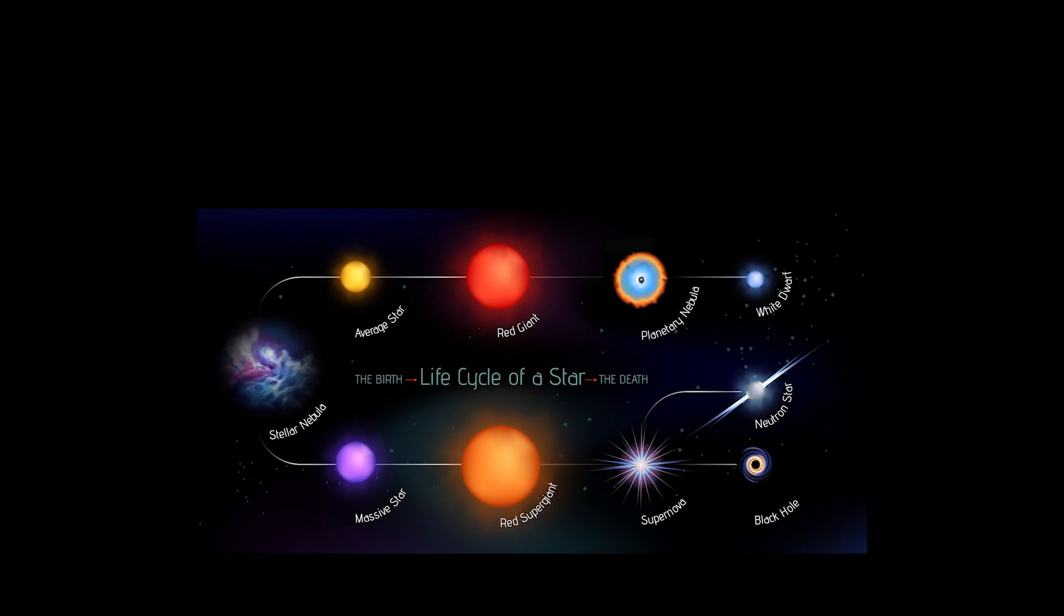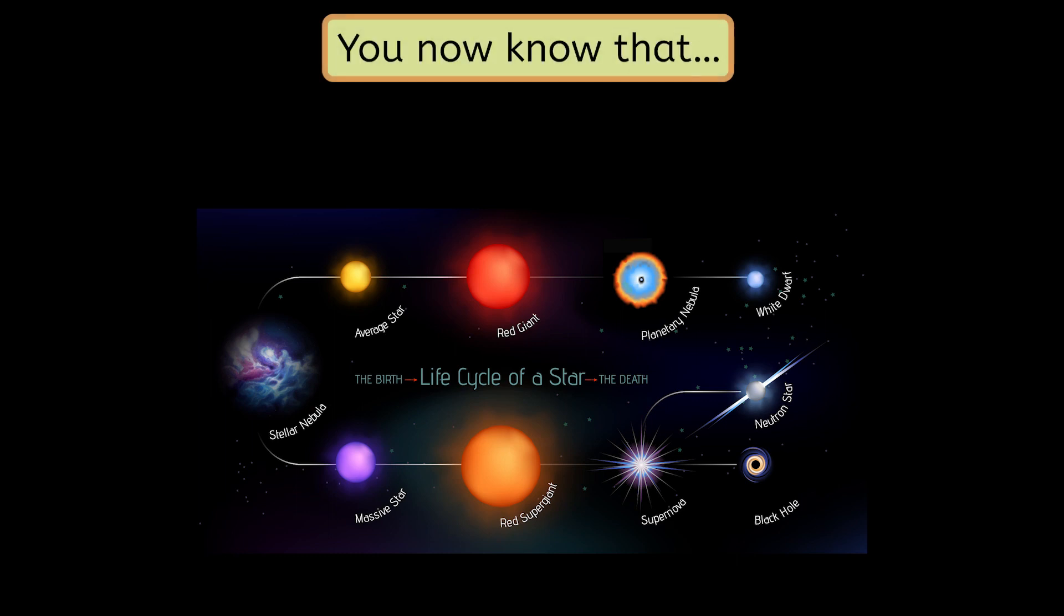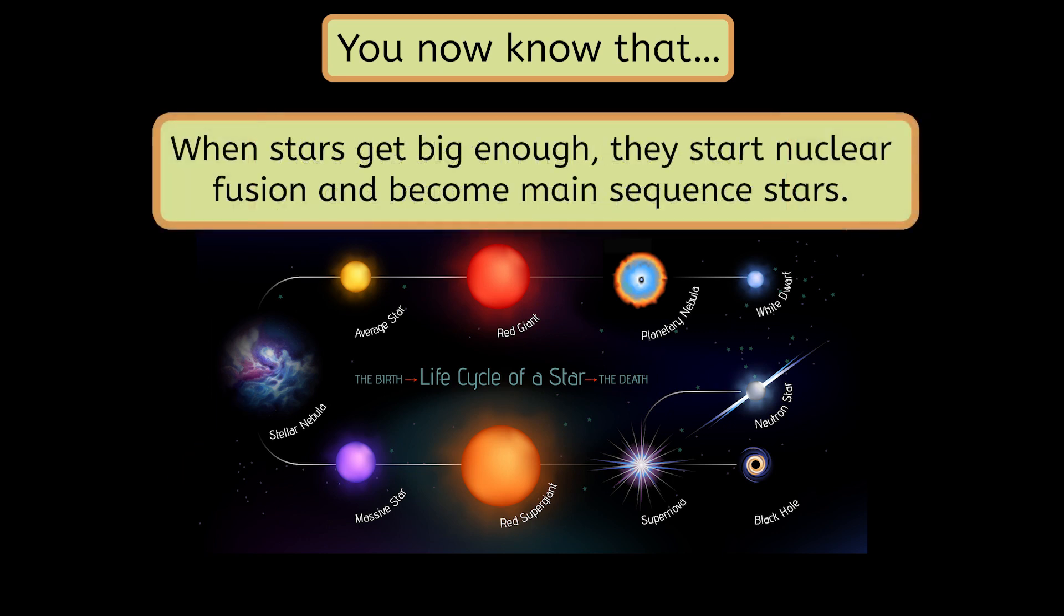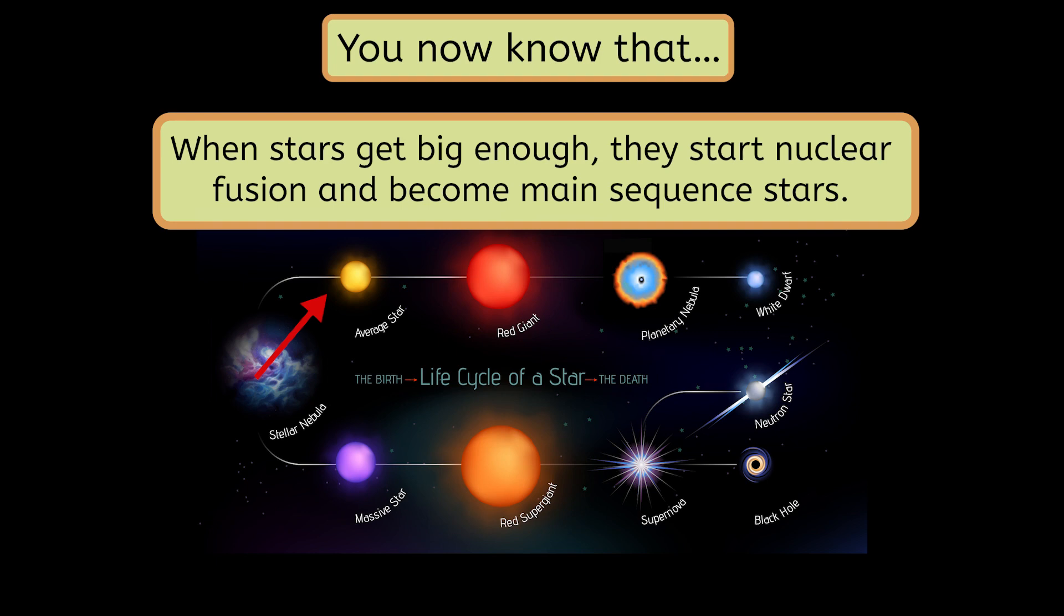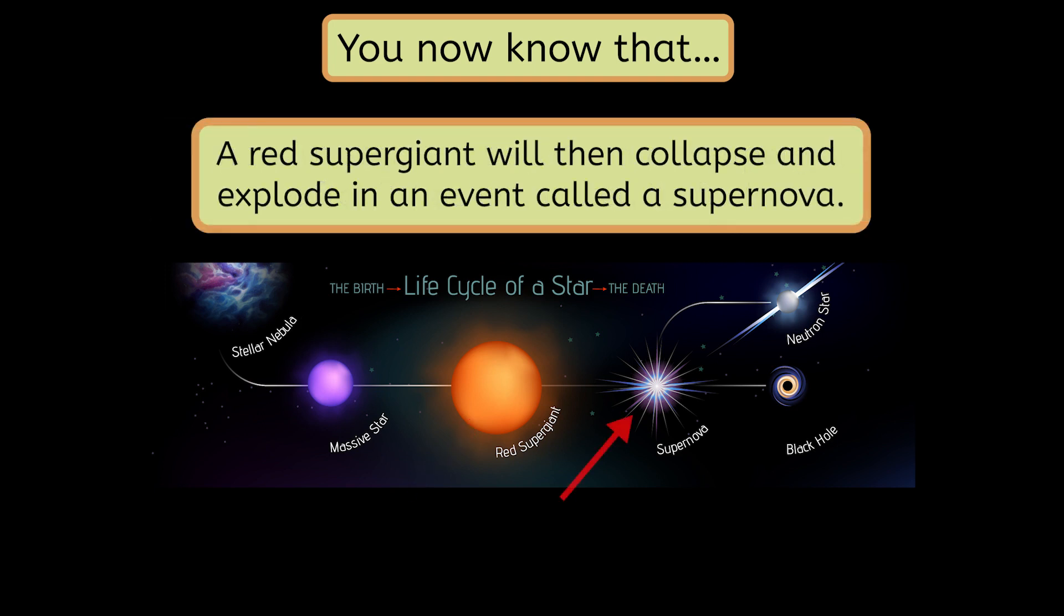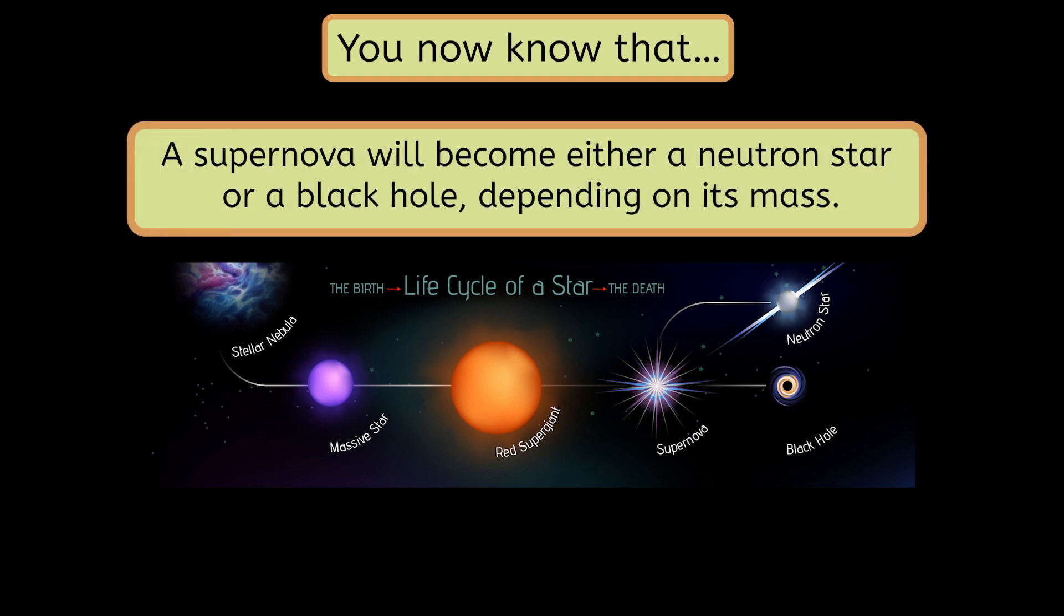Now that you've learned all about the life cycle of both average-sized stars and massive stars, let's recap. All stars start in nebulas when gases condense into a protostar. When they're big enough, they start nuclear fusion and become main-sequence stars. Then, the paths of average-sized stars and massive stars diverge. A massive star will become a red supergiant after it has exhausted its fuel. Due to its mass, it will then collapse and explode in an event called a supernova. Lastly, a supernova will become either a neutron star or a black hole, depending on its mass. Be sure to complete the practice questions and extension activities that go with this lesson as you continue your journey into the universe. And as always, remember, you are out of this world!